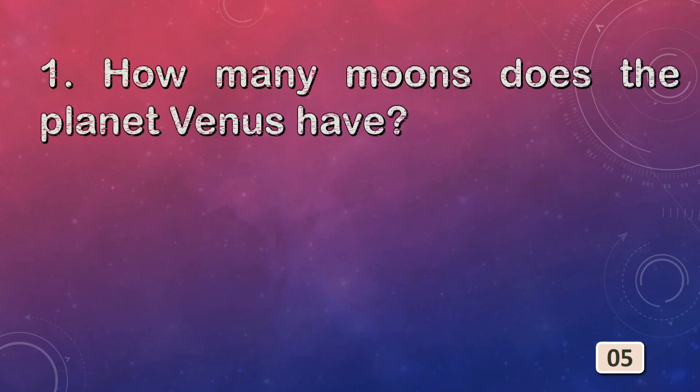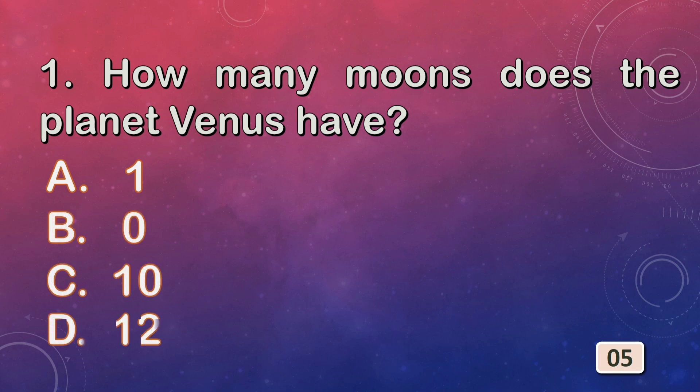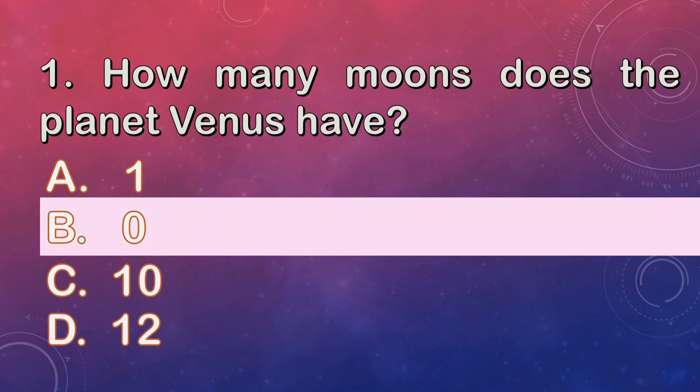How many moons does the planet Venus have? Options are: A. 1, B. 0, C. 10, D. 12. The correct answer is option B: zero.